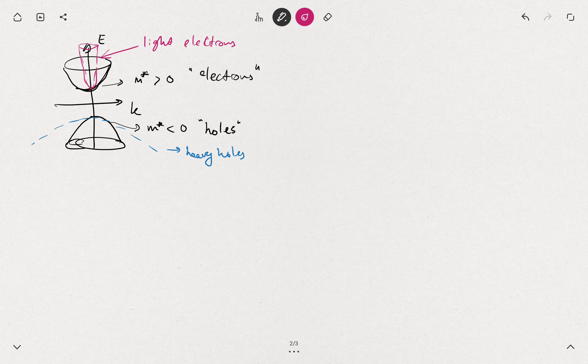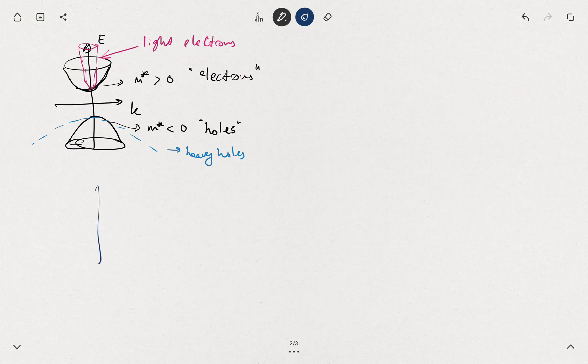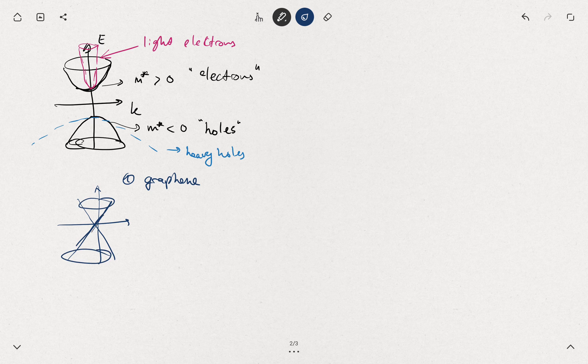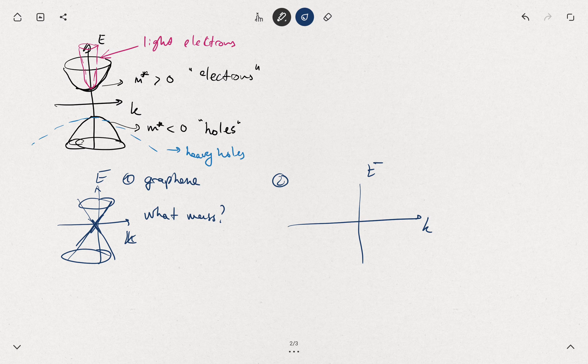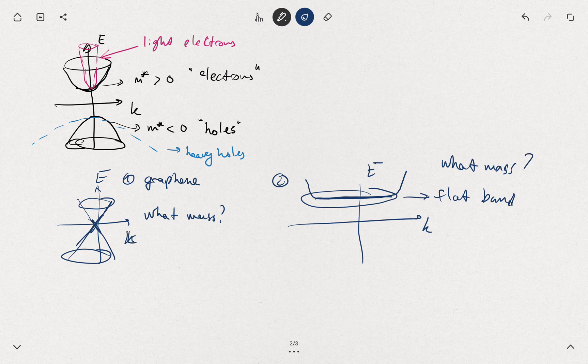Now you can think about two other extreme examples in your free time. First case is graphene, where you have the linear dispersion relation. What would be the mass? And the second case: what will happen if you have a dispersion relation which looks like this, where you have a sufficiently large flat region? It's called a flat band. So what mass do the particles have?